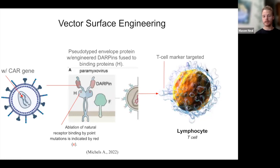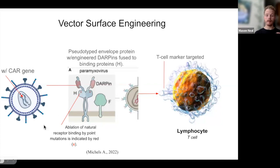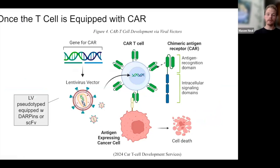So here is bringing all of this together. We have a lentiviral vector carrying the CAR gene. The DARPINs are fused to the binding protein on the lentiviral vector, which ablates the natural receptor binding point — indicated by the red X here. That means the DARPIN will now bind specifically to a marker on the T cell, such as CD8, CD4, and others. Ultimately, when the lentiviral vector targets the T cell, it develops a CAR-T cell with a chimeric antigen receptor that will direct the killing of the tumor cell.